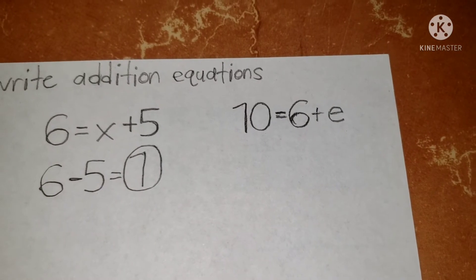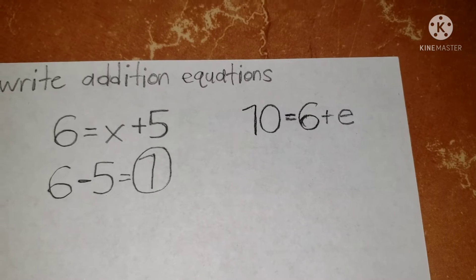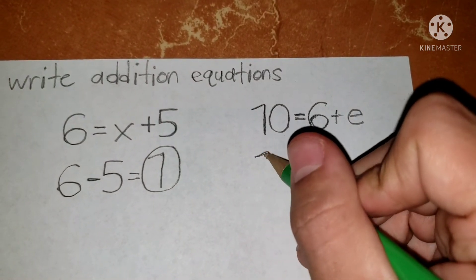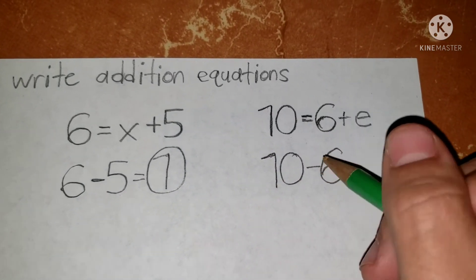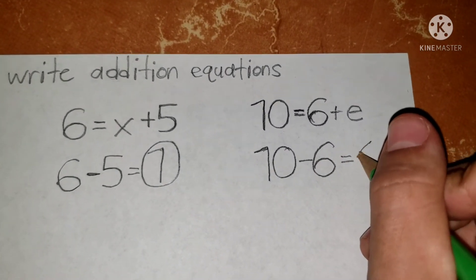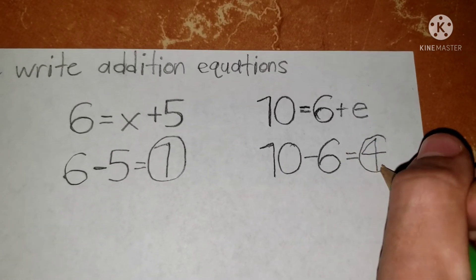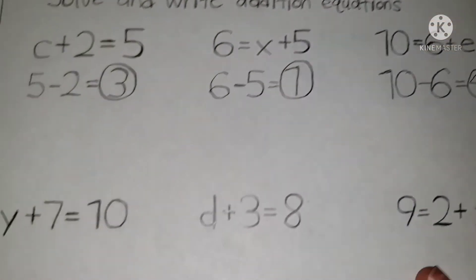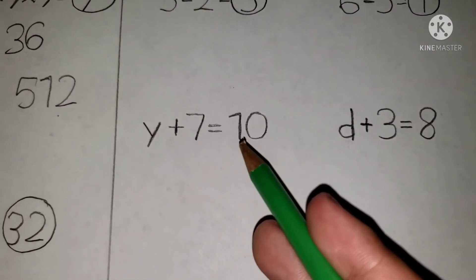Number three: ten equals six plus e. So ten and six — you have the positive, so you make it negative. It'd be ten minus six. And the final answer? Ten minus six equals four.